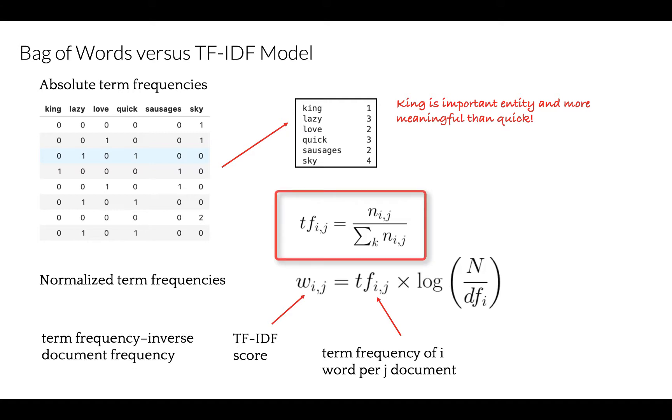TF, Term Frequency, gives us the frequency of the word in each document in the corpus. It is the ratio of the number of times the word appears in the document compared to the total number of words in that document. It increases as the number of occurrences of that word within the document increases. And each document will have its own TF.